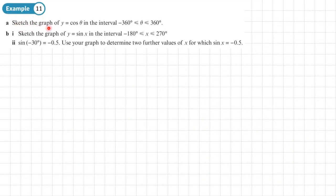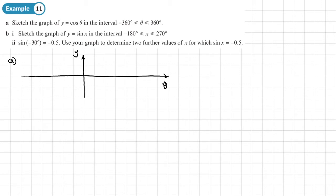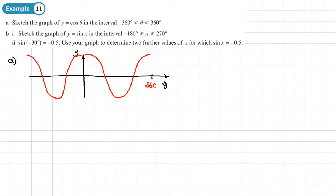Example 11: sketch the graph of y equals cos theta in the interval from negative 360 to positive 360. We draw a y-axis and a theta axis. Cosine starts at 1 and goes down, so we draw one full cycle from 0 to 360, then the same in the other direction, stopping at negative 360. Label it y equals cos theta.